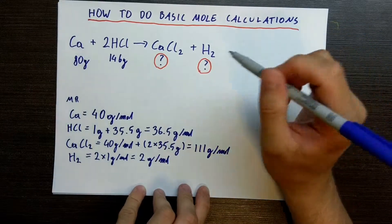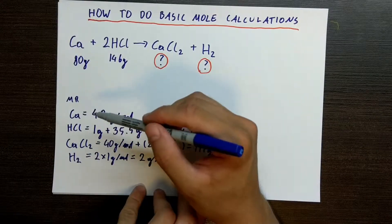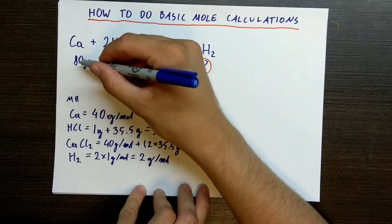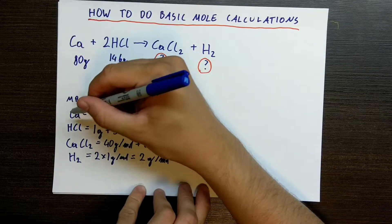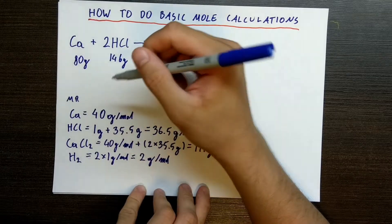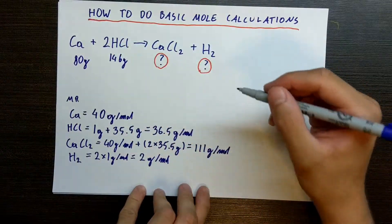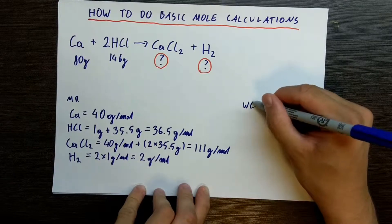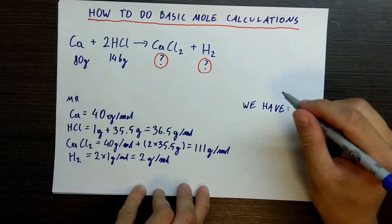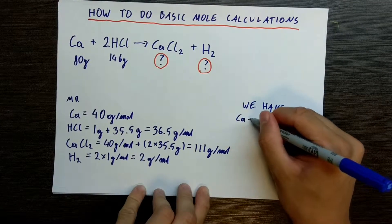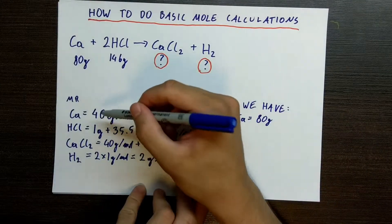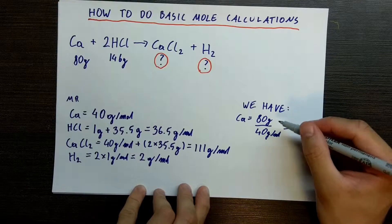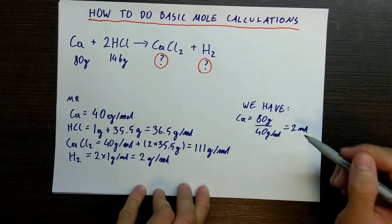So how do we figure out how many moles? We have the molecular masses, so now we just need to calculate. We have 80 grams of calcium, and calcium's molecular mass is 40 grams per mole. So 80 grams divided by 40 grams per mole gives us 2 moles. We have 2 moles of calcium.